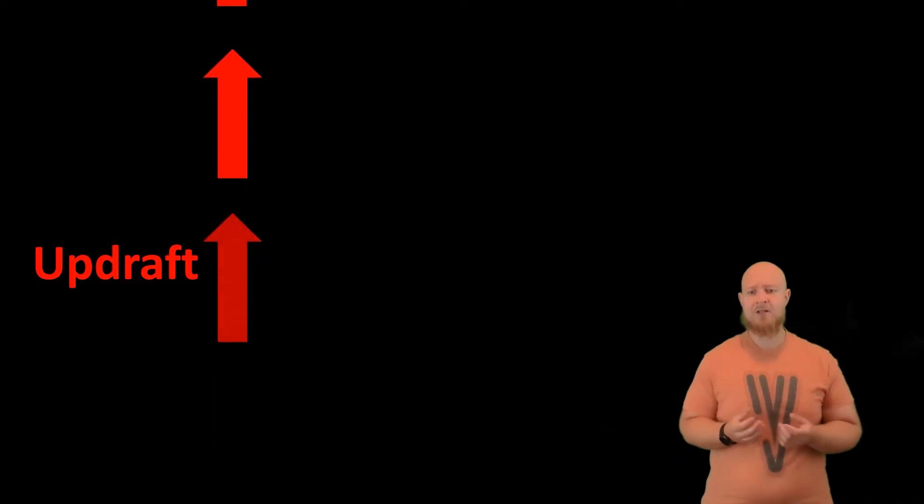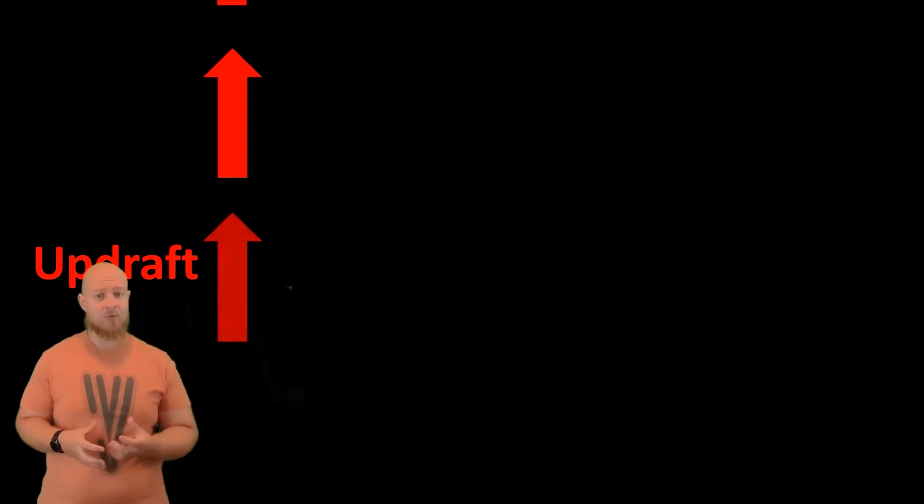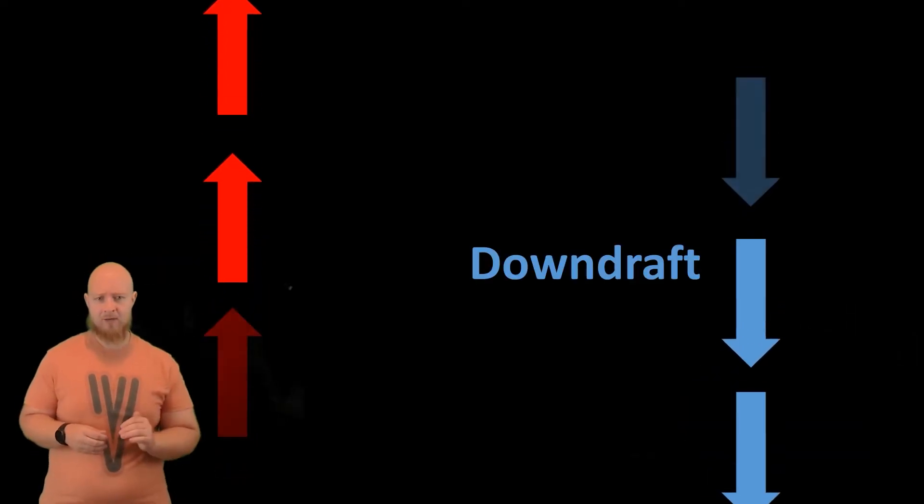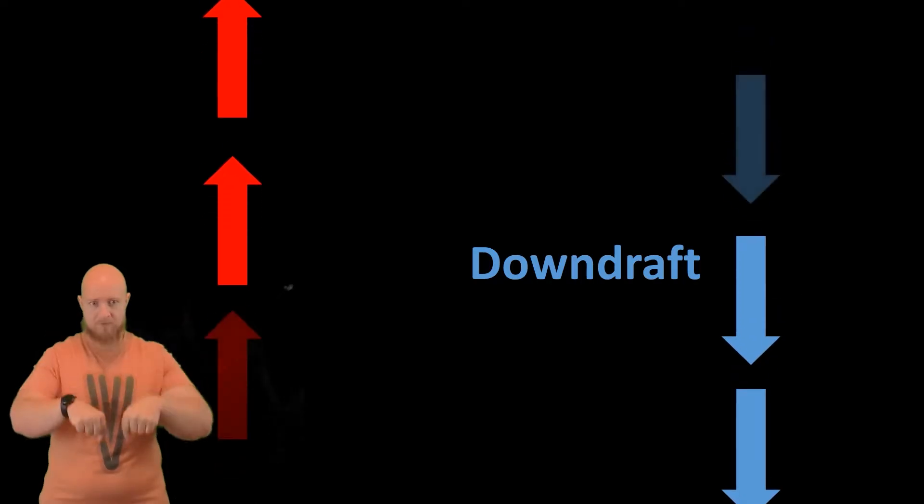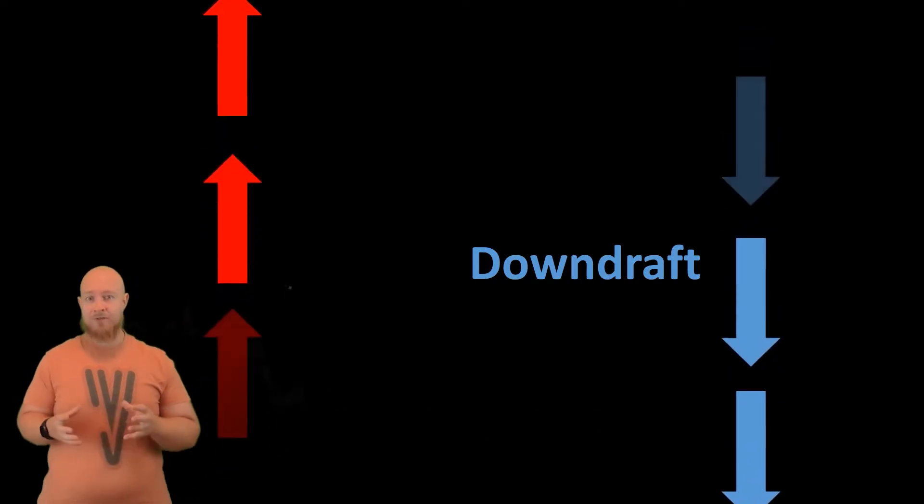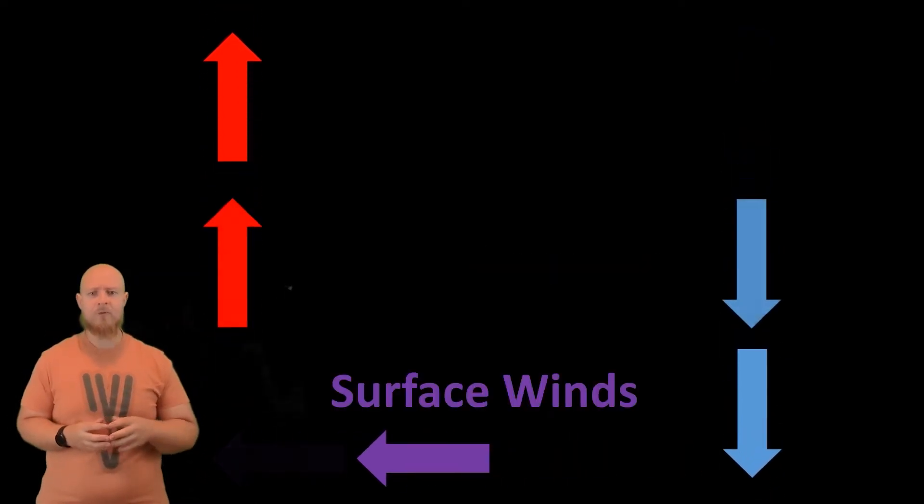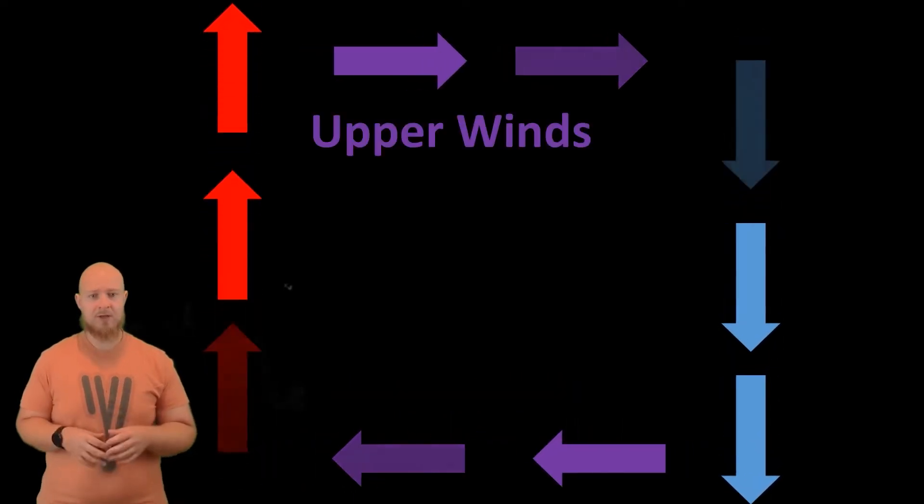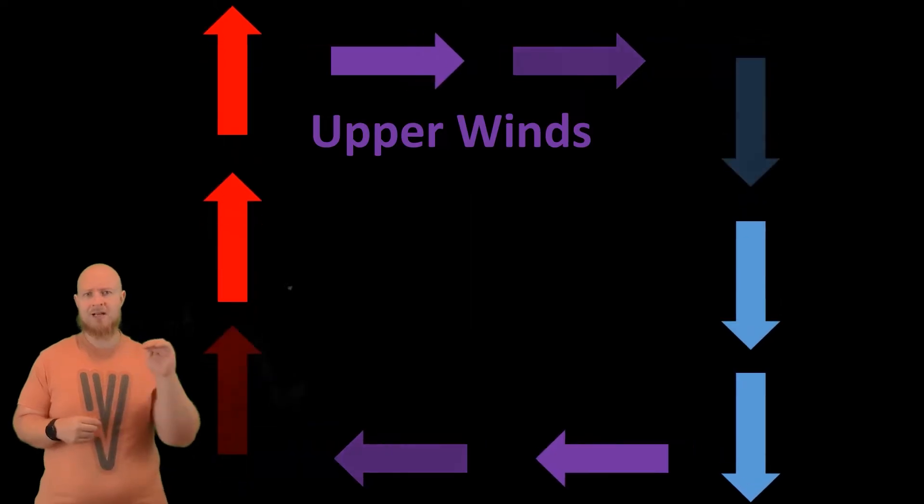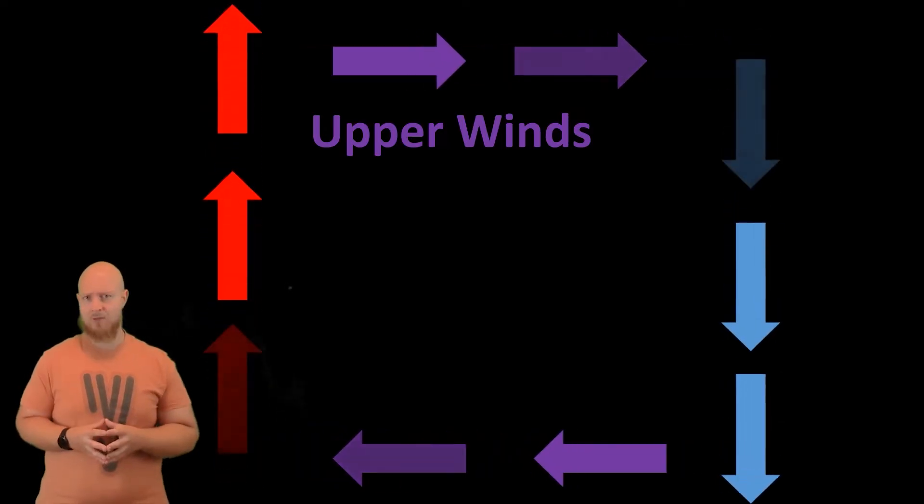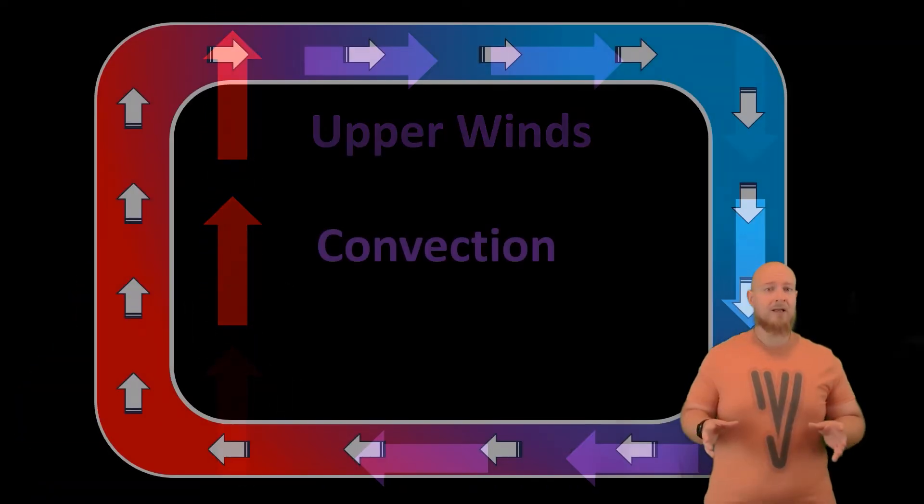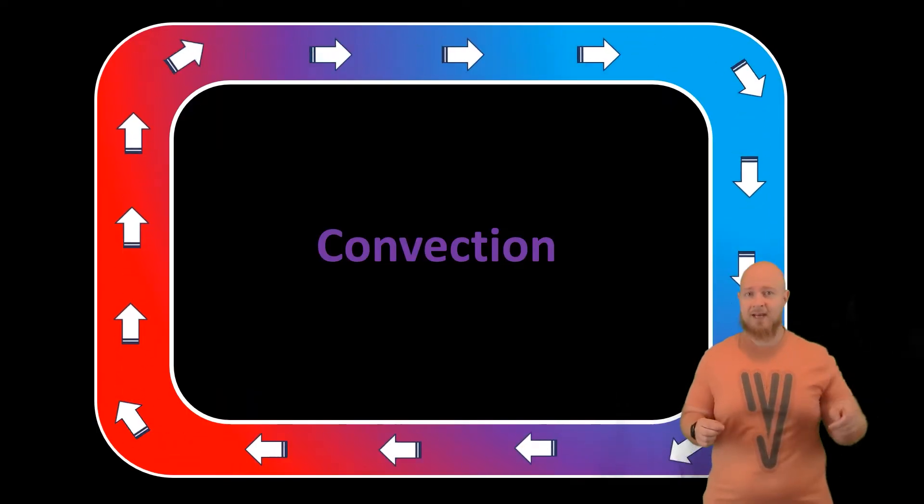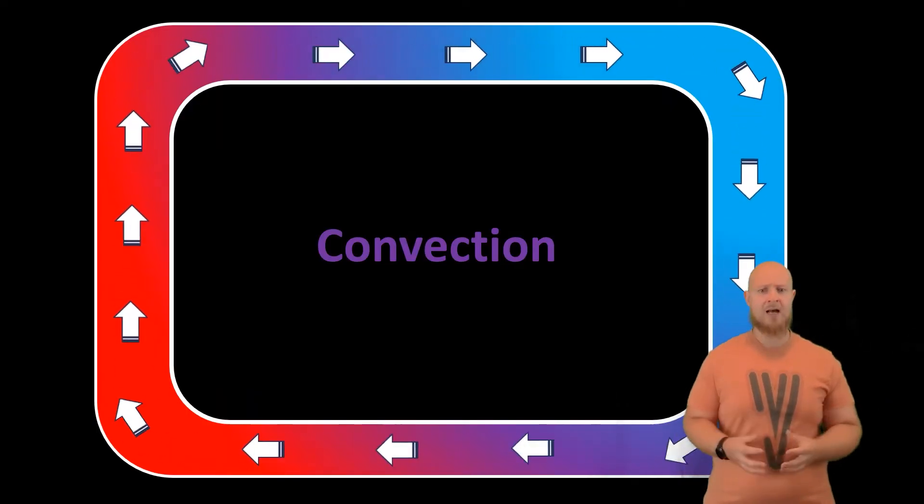An updraft is a rising air mass that is moving up vertically. A downdraft is a falling air mass going down vertically. Surface winds refer to air moving horizontally parallel with the ground, and the upper winds refer to air moving horizontally at the top of the cycle. So now we can get into the major convection cycles that we see on earth.